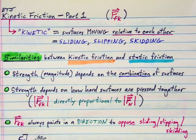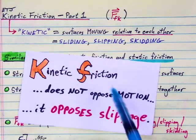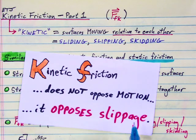The third similarity is that the force of kinetic friction always points in a direction to oppose sliding, slipping, or skidding. Kinetic friction, like static friction, does not oppose motion. It opposes slippage.